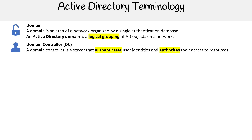You have domain controllers, short for DC. A domain controller is a server that authenticates user identities and authorizes their access to resources. If you do not have domain controllers, there's no way to interact with the actual directory. When we say directory, just think of it as a database — it's a database of records for users and authentication.